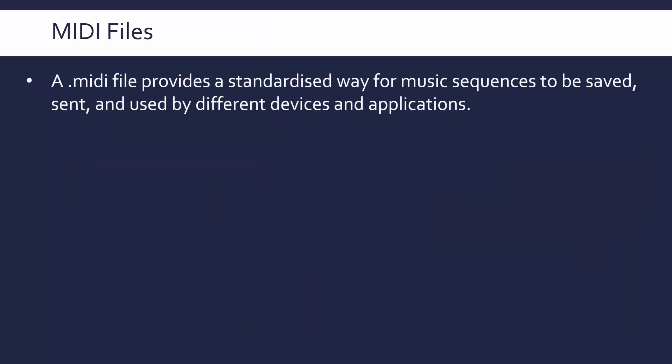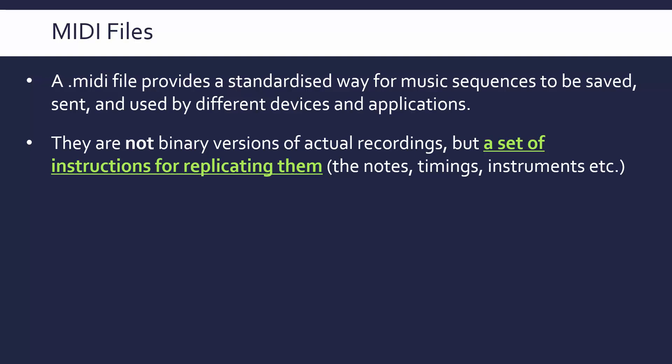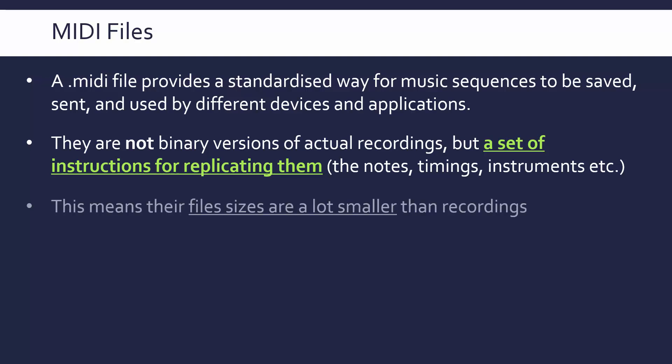A MIDI file has a standardized way to save music sequences, send them, and it can be used by different devices and applications. The key point is that a MIDI file is not a binary version of actual recordings — it's a binary version of a set of instructions for replicating the recordings, saving properties like the notes being played, the timings, and the instruments. MIDI would not record any speaking or singing; it's just the instrument itself. Because we're saving just instructions, MIDI files have much smaller file sizes than recordings, which sample thousands of times per second.